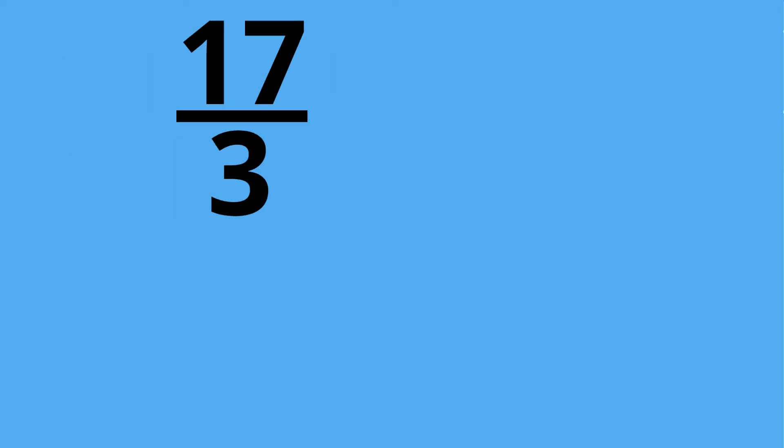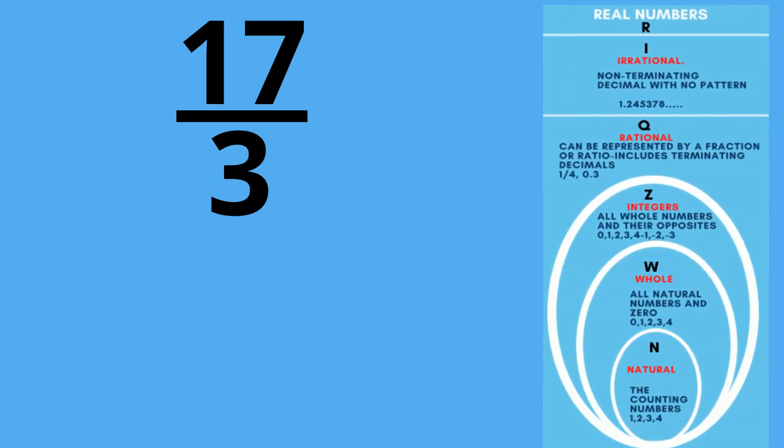Next we have the fraction 17 over 3. If you divide 17 by 3, it becomes 5.66666, which is a recurring decimal. So it is a rational number and also a real number.